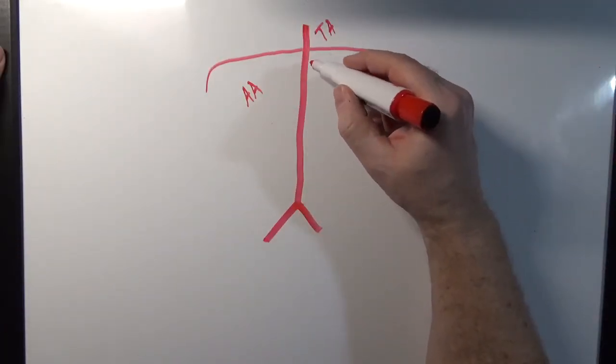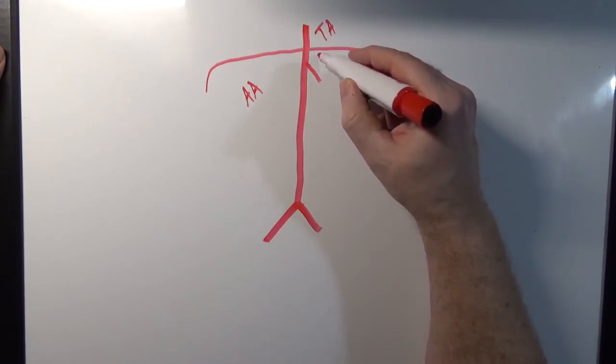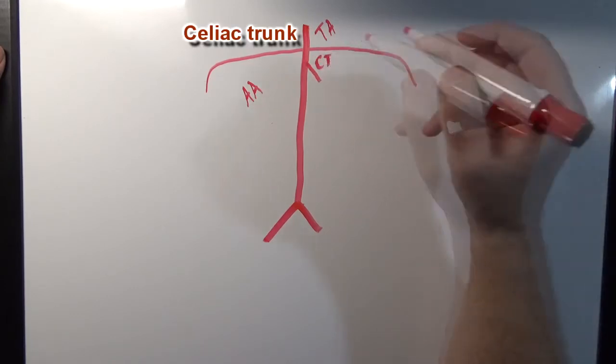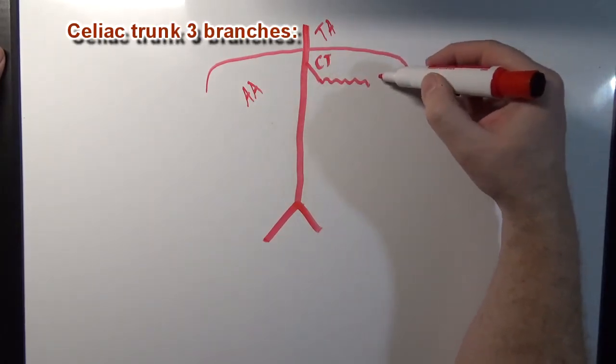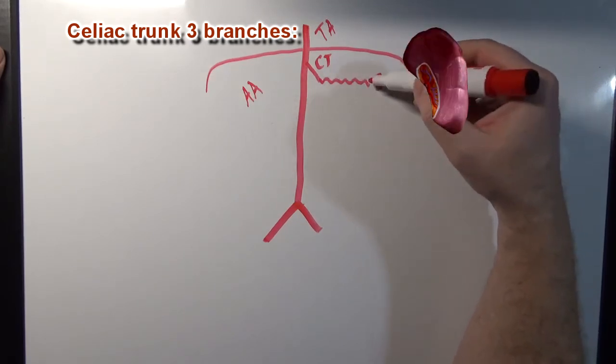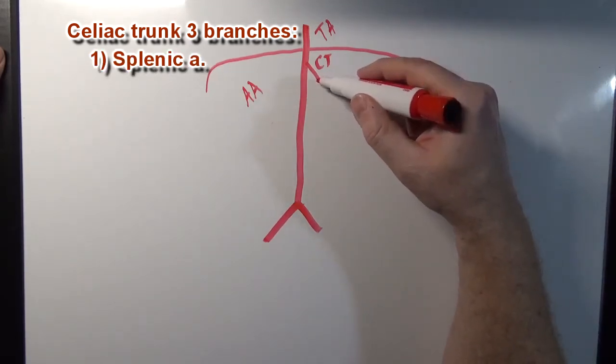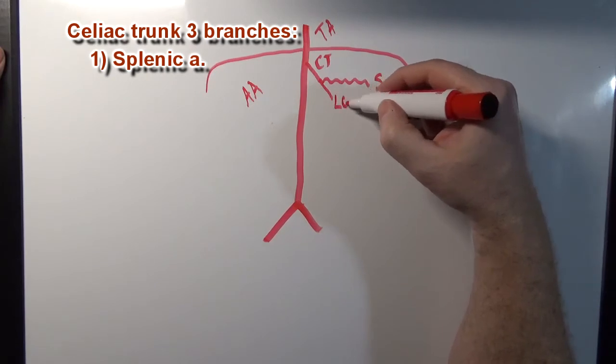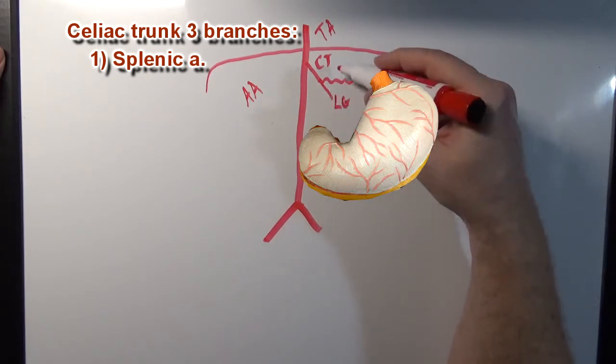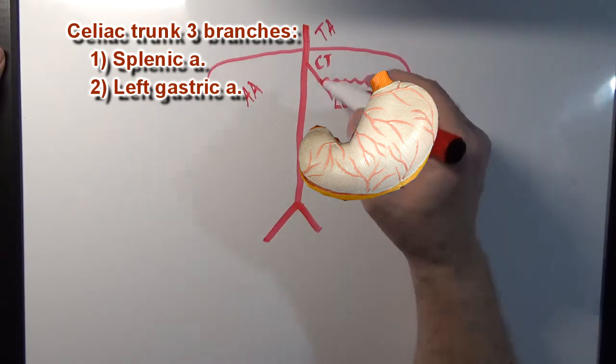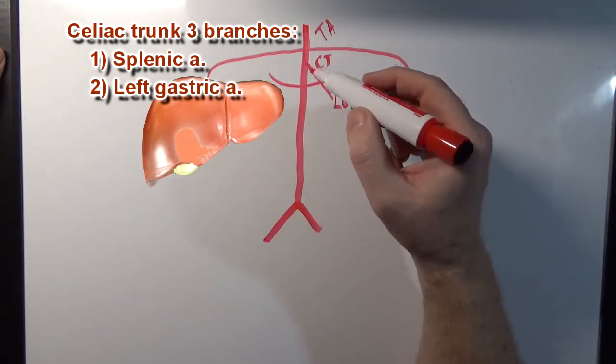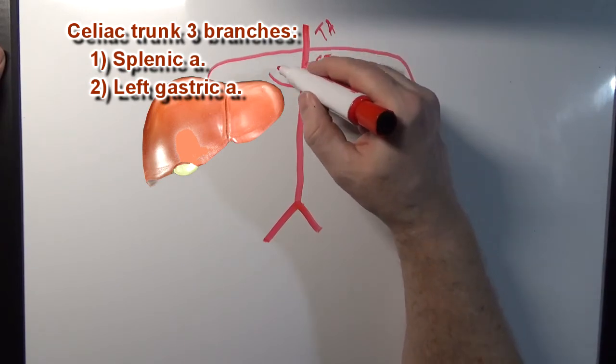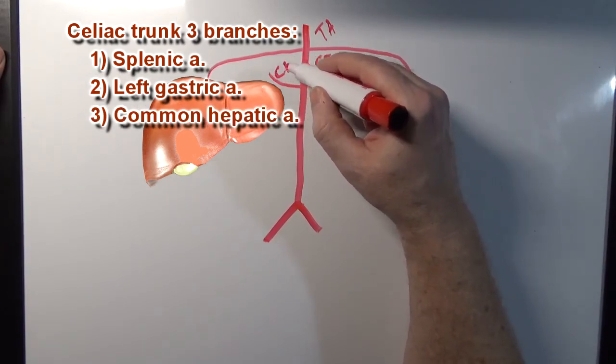The first branch I'm going to talk about off of the abdominal aorta is going to be this one right here, and we're going to call that the celiac trunk. Now, the celiac trunk is going to have three branches. There's going to be a branch that goes to the spleen, so that's the splenic artery. There's going to be a branch that's going to go to the lesser curvature of the stomach, so we're going to call that the left gastric, and then there's going to be a branch that's going to come over here toward the liver, and that blood vessel is called the common hepatic artery.